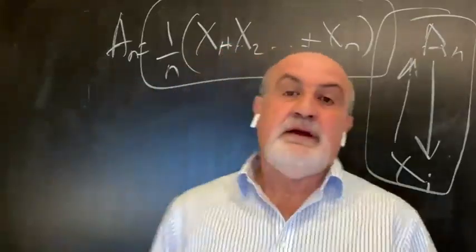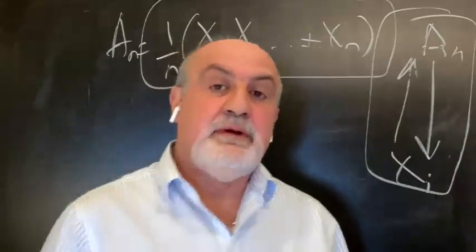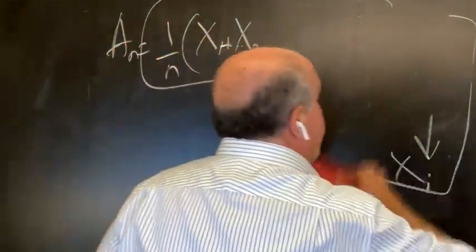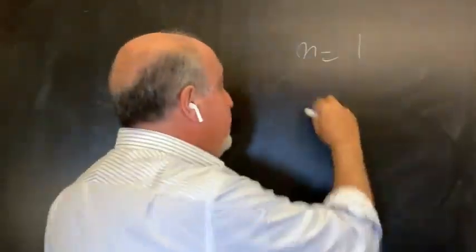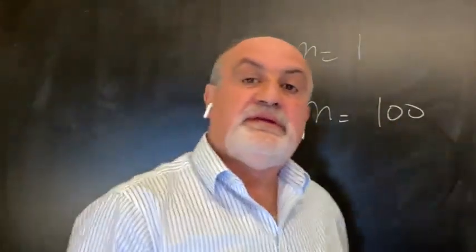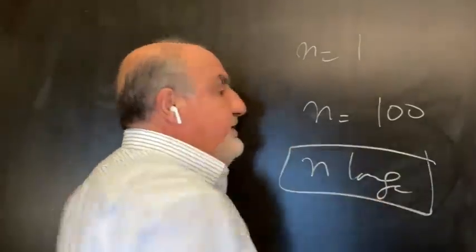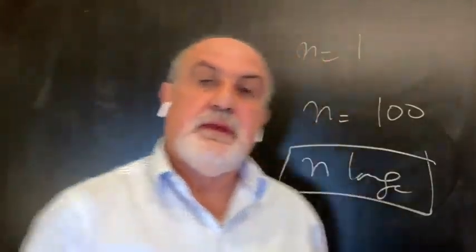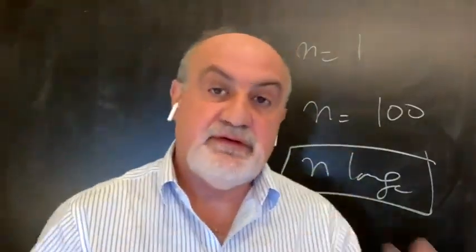So, so far, explain what evidence-based means, what the law of large number means. And let's go back now to my N of 1. To repeat, N of 1 is clinical knowledge. N, let's say, 100 or a large group is statistical knowledge. And N large is risk management knowledge. And sometimes the properties don't flow up properly. Like the risk characteristics don't flow up.